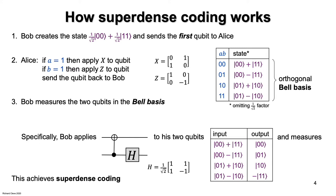Superdense coding makes use of an interesting property of the Bell basis where, in step two, Alice applies an operation to just one of the two qubits — she only has one qubit in her possession. But by doing so, she can change the state to any of the four Bell basis states. That step wouldn't work if the computational basis were used: Alice could manipulate the state of the first qubit, but she couldn't do anything to the second qubit, which is in Bob's possession. And there's no way of doing this using classical bits.